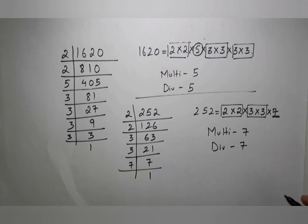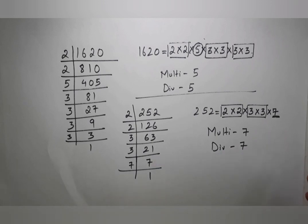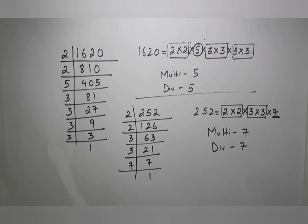After multiplying or dividing, the resulting number will be a perfect square, as shown in the first example. I hope you have understood how to do this — it's a very simple method using prime factorization. If any question asks for the smallest number to be multiplied or divided to get a perfect square, you can use this approach. Thank you.